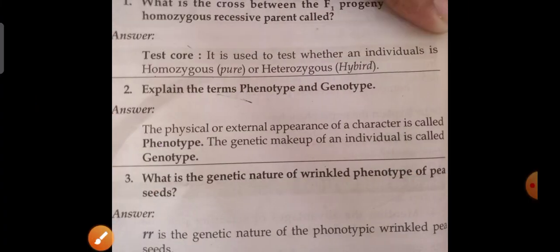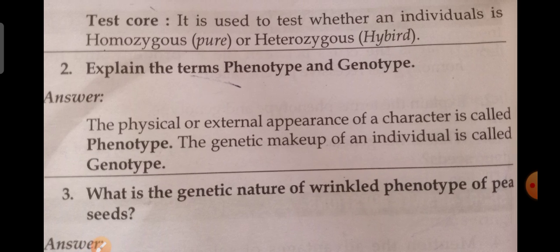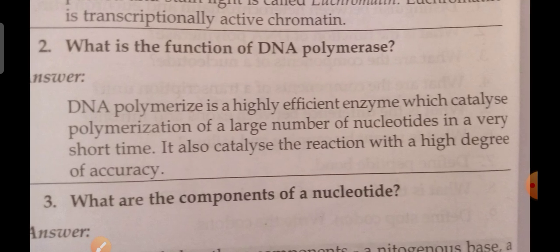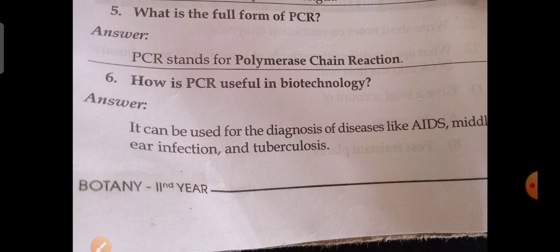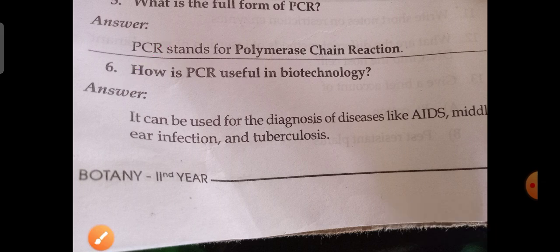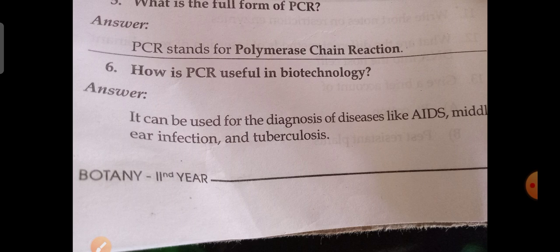Explain the terms phenotype and genotype. Phenotype means the external appearance of a character; genotype is the genetic makeup of an individual. This is also important. Next: what is the function of DNA polymerase? — also an important question. What is the full form of PCR? Polymerase Chain Reaction. PCR is very important — this question has appeared twice. PCR is useful in biotechnology for the diagnosis of diseases like AIDS, middle ear infection, and tuberculosis.